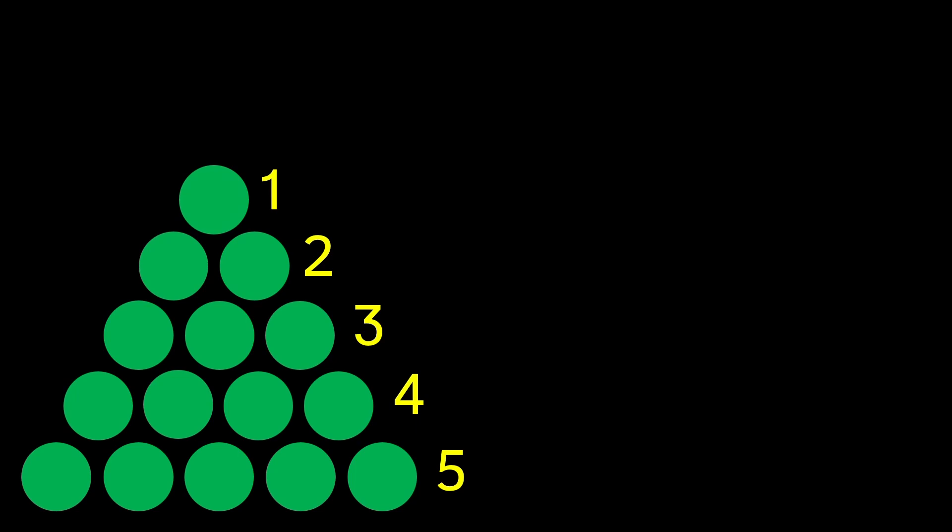Now, the next couple of patterns are a bit tricky to spot, but they're at the heart of why our formula works. If we take the first and last row of the triangle and add them, we get six. We also get six if we add the second and second to last rows. The third row doesn't have a pair, so we leave it as three.